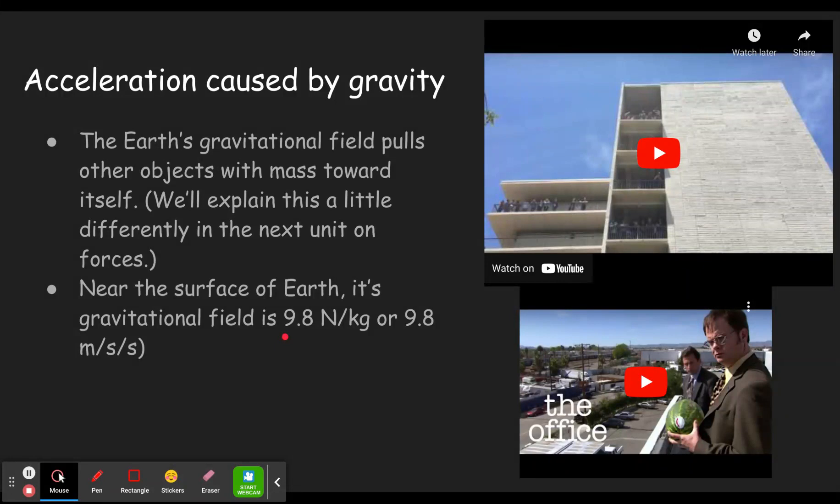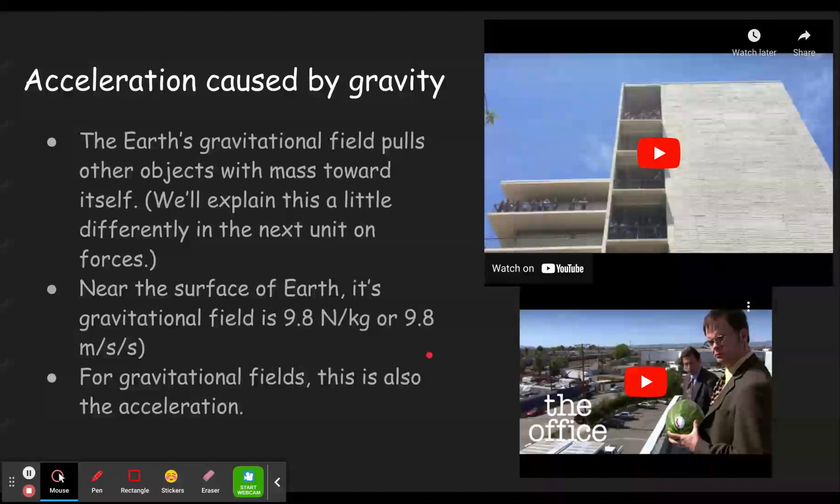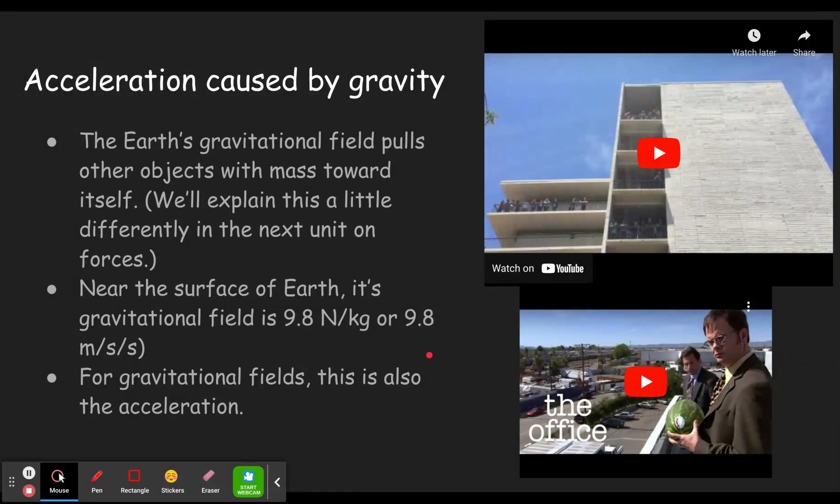We can also, if you take newtons and divide by kilograms, which we haven't gotten to yet in my class, you'd get 9.8 meters per second per second, which we often write as meters per second squared. Notice that is an acceleration. So gravitational fields, that number for the gravitational field is also the acceleration that it causes, 9.8 meters per second squared. And that's going to be the key to this.